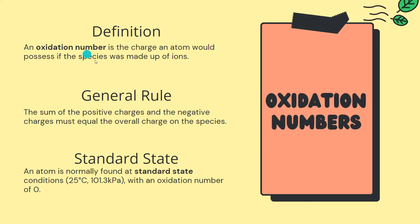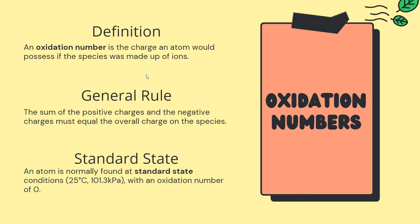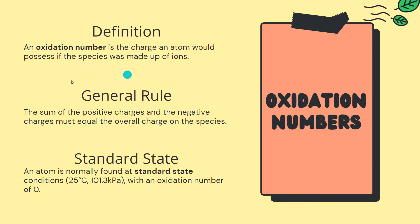What is an oxidation number? It is the charge an atom would possess if the species was made up of ions. Essentially, finding the oxidation number is like balancing a chemical equation, except that we balance the charges on a chemical species. The general rule is: the sum of the positive charges and the negative charges must equal the overall charge on the species.